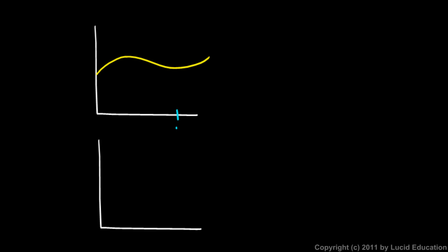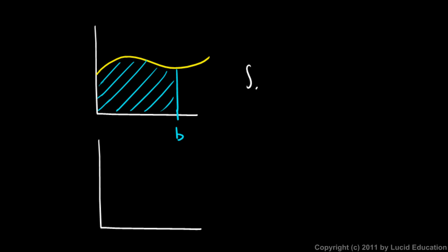Imagine the area from 0 up to that point b. The area there is going to be the integral from 0 to b of f(x) dx, and according to what we've seen already, that will be A(b), where the area function is the antiderivative.